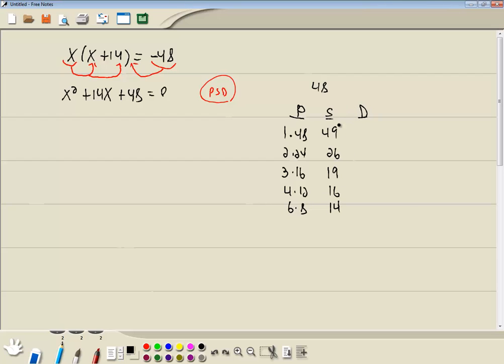And a D column, D for difference, subtract smaller from larger. 48 minus 1 is 47, 24 minus 2 is 22, 16 minus 3 is 13, 12 minus 4 is 8, 8 minus 6 is 2. The number we're looking for is a number in our middle term, which is 14, which is right here, which means we'll use 6 and 8.